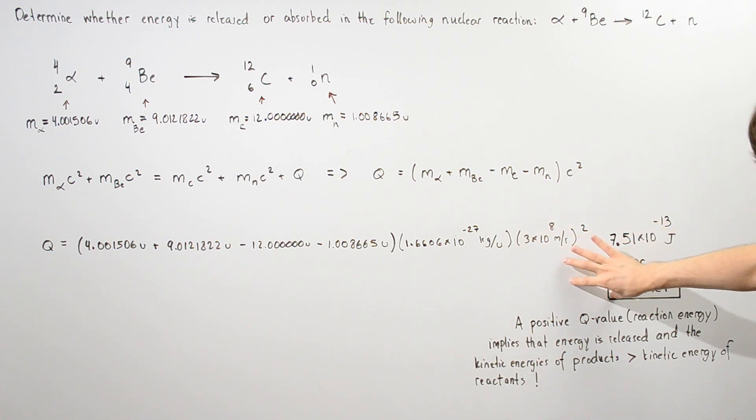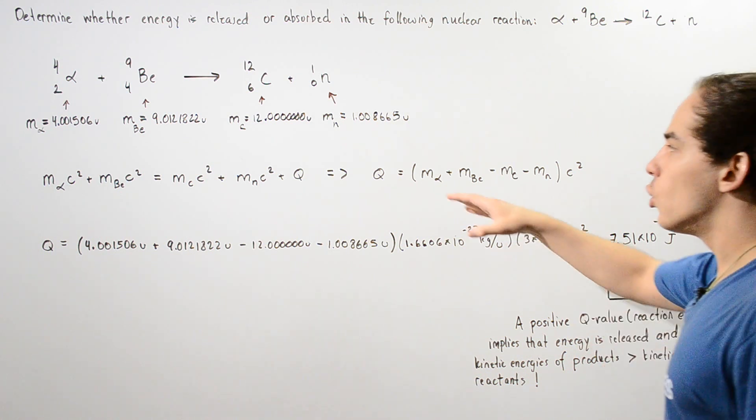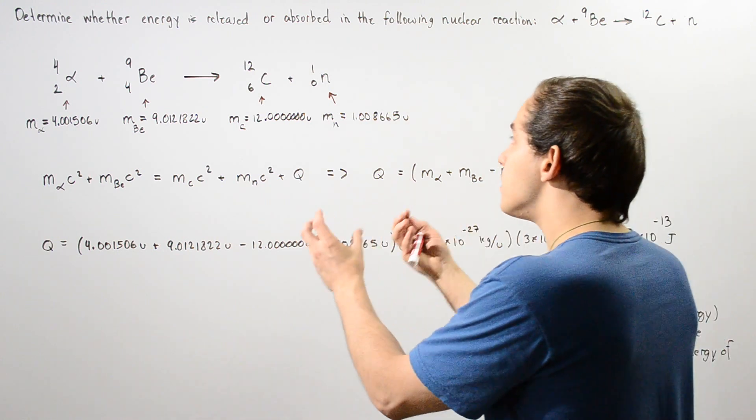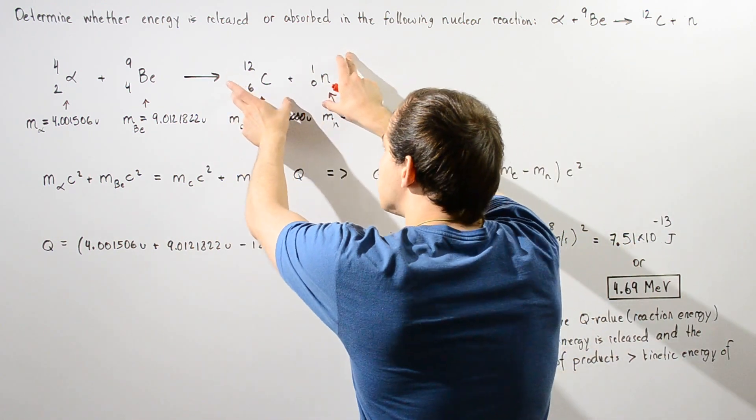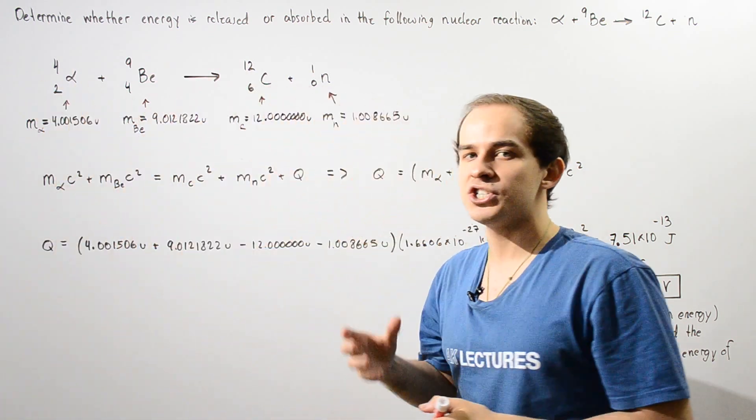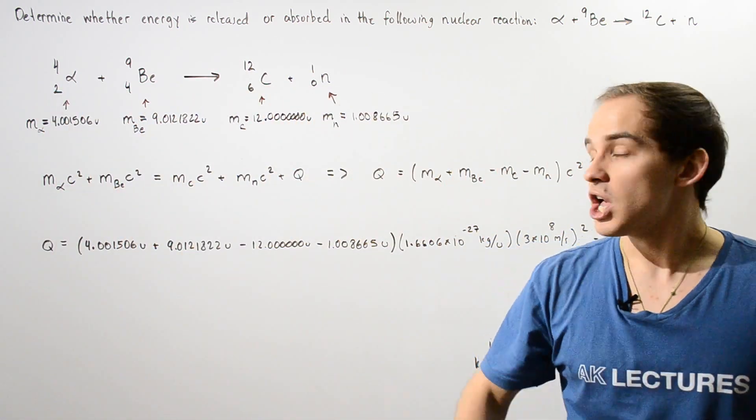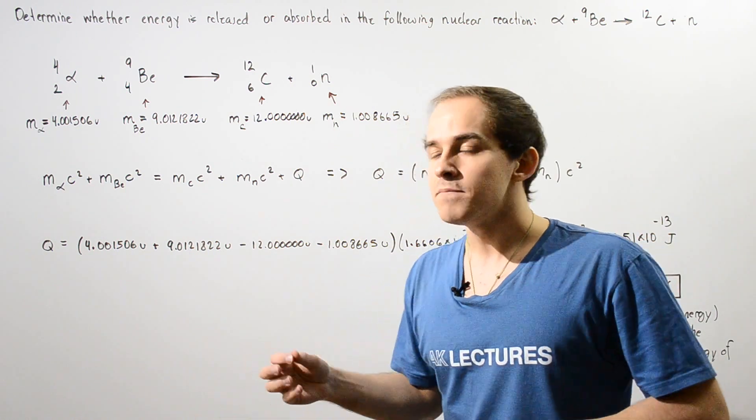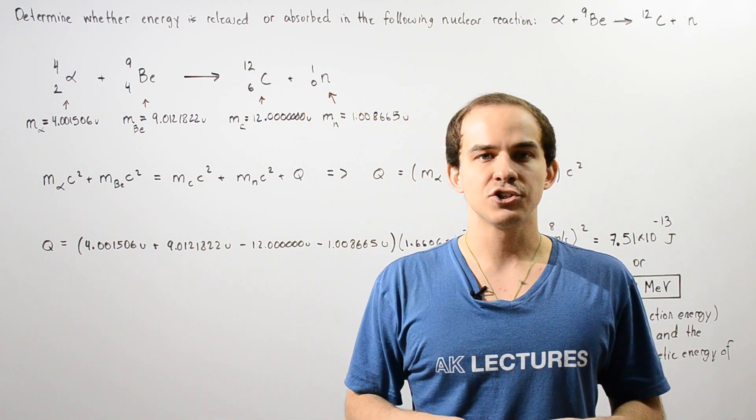A positive Q value, a positive reaction energy, implies that energy is released when this nuclear reaction takes place and the sum of the kinetic energies of the products is greater than the sum of the kinetic energies of our reactants. So this nuclear reaction is in fact an exothermic or exoergic nuclear reaction.